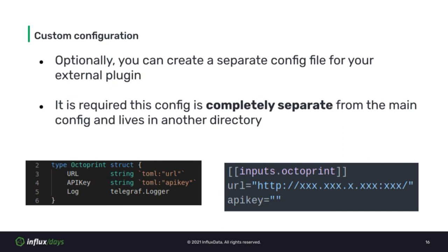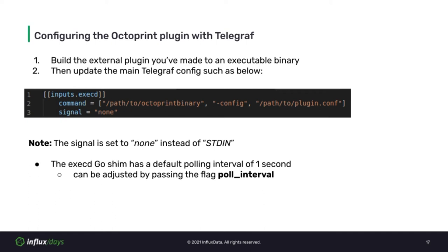Configuring an external plugin made with the Go Shim is very similar to the bash script example shown earlier. You will need to compile your program to an executable binary and update the command to point to it. The OctoPrint plugin requires a configuration file, so in the command array, the --config flag and the path to the plugin config are set. Also note that the signal is set to none, because with the ExecD Go Shim it will output metrics during a set interval — one second by default, but configurable by passing a --poll_interval flag.